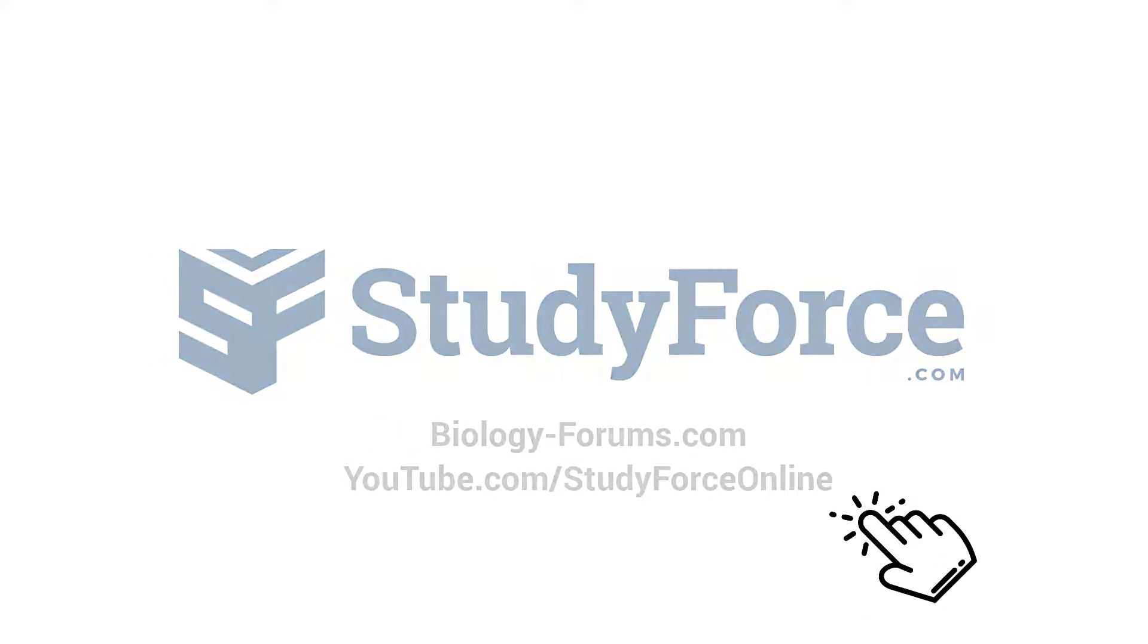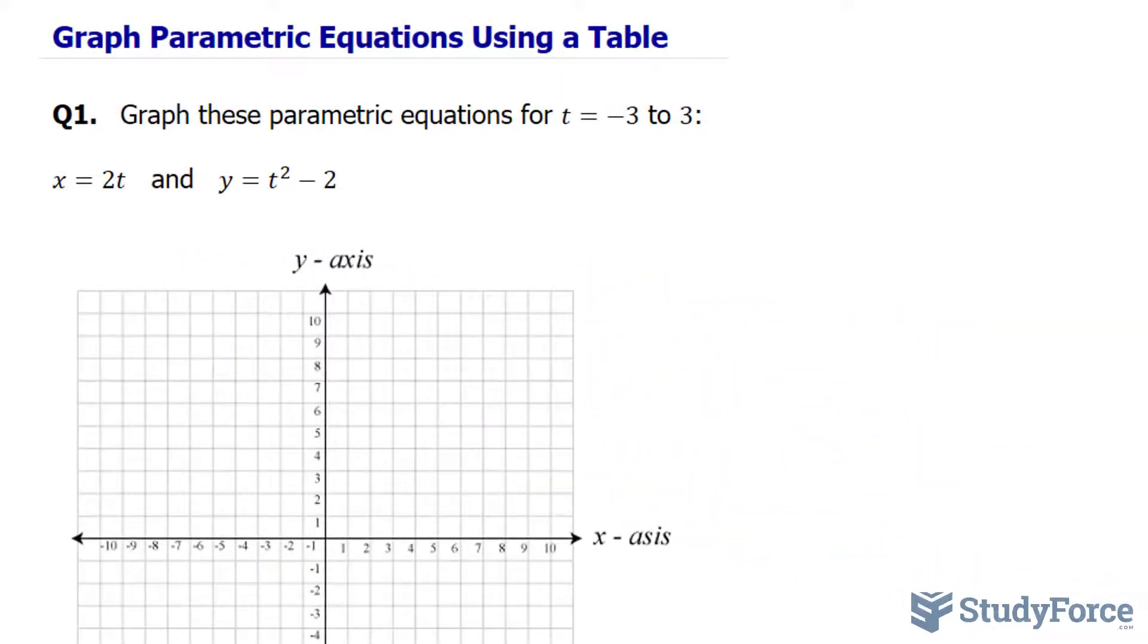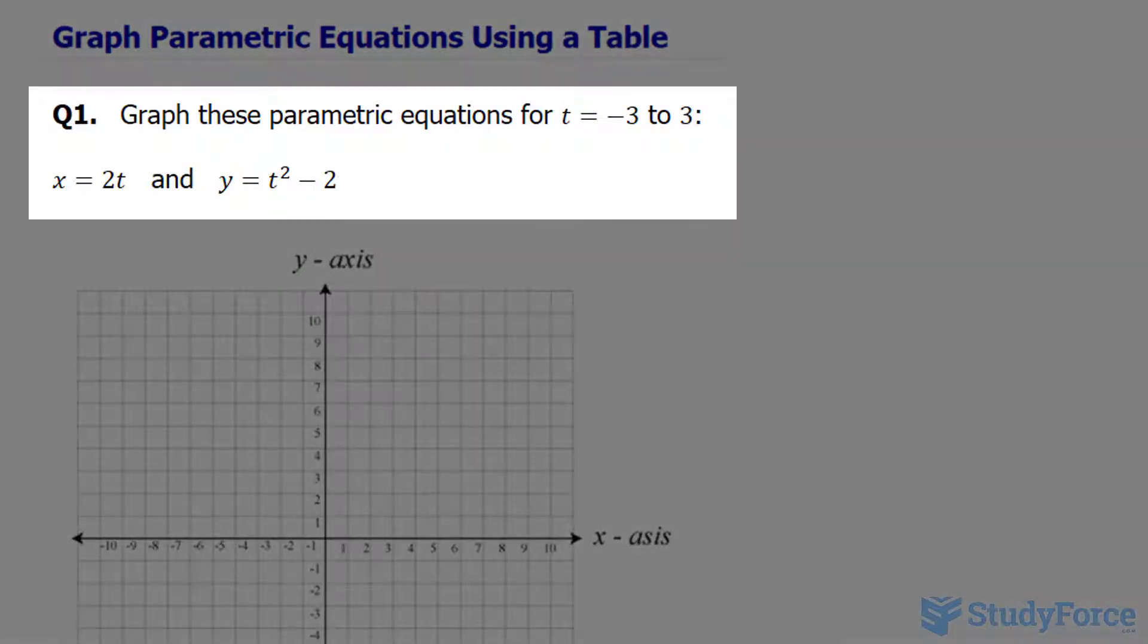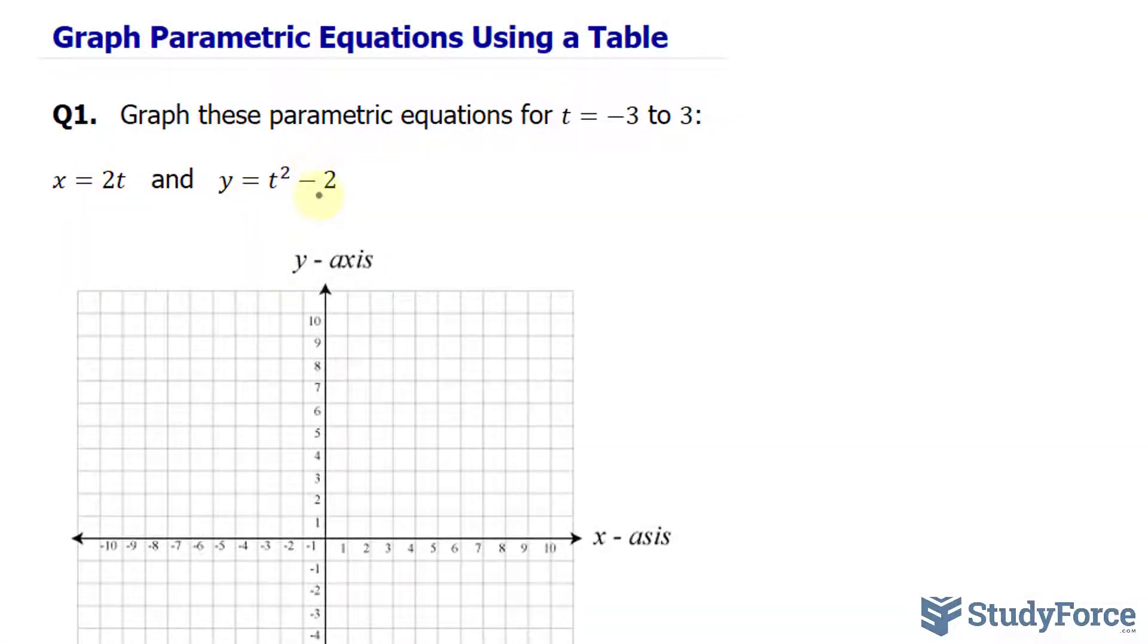In this lesson, I'll show you two examples on how to graph parametric equations using a table. The first question reads: graph these parametric equations for t is equal to negative 3 to 3. We have the equation x is equal to 2t and y is equal to t squared minus 2.